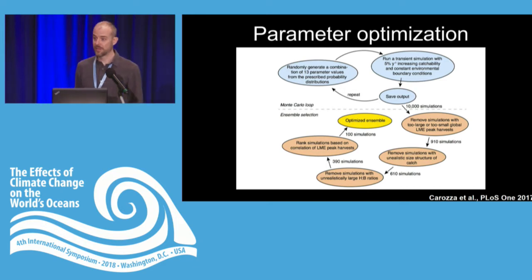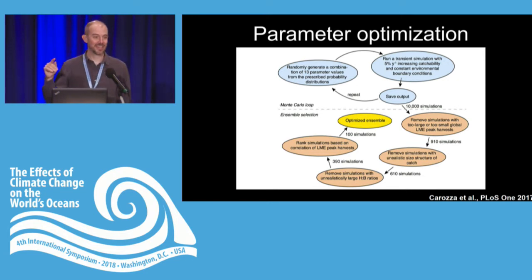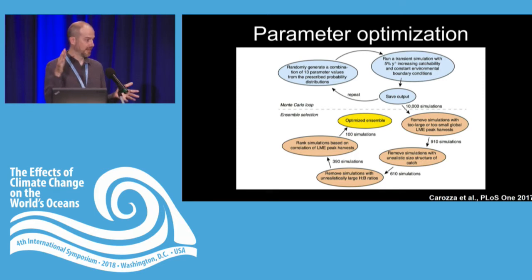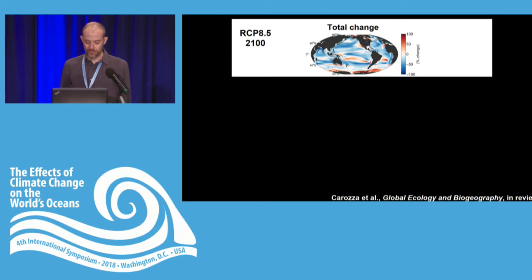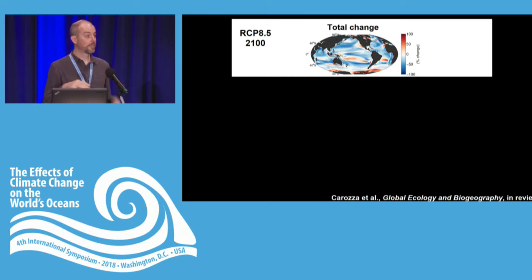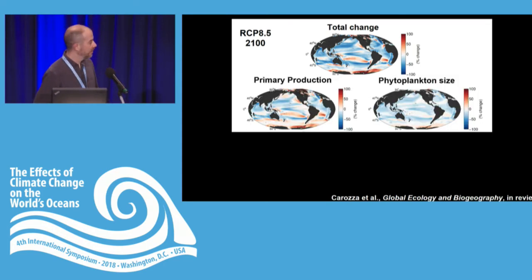The harvest by fishing activities is determined by a coupled integrated economic model with very simple dynamics for determining effort based on catchability — how good people are at catching fish per unit effort — the ex-vessel price of fish, and the cost per unit effort. This all happens inside each grid cell of the model independently and interacts together running forward over time. We designed this model to be computationally efficient so we could run it 10,000 times with different parameter combinations and compare against data to produce an optimized ensemble.